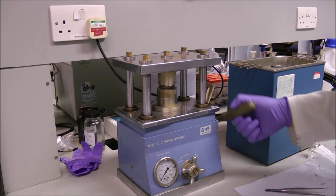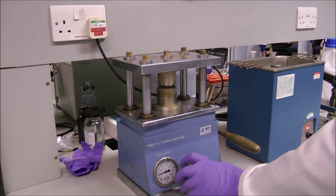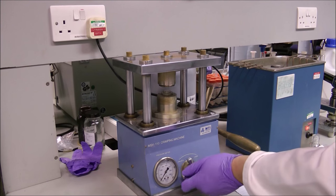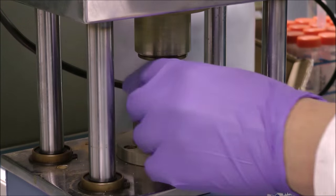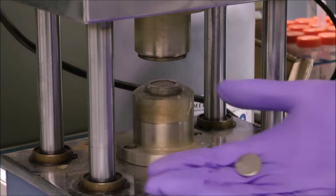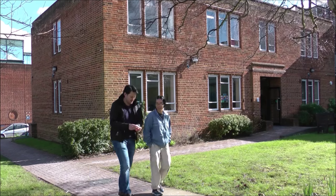The final step is to crimp the coin cell, hermetically sealing it, preventing any leaks or contamination. Now we have produced our coin cell, let's go and test them.